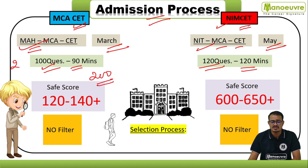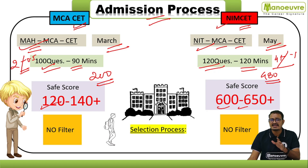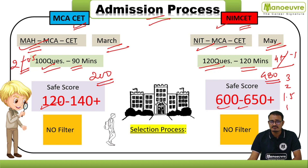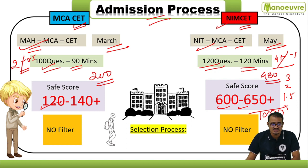The safe score for MCA CET (out of 200, with marking +2 and -0.5) is 120 to 140 plus marks to get into a top college. For NIMCET (marking +4 and -1), out of a total of 480 marks, you need around 600 to 650 plus marks — because the marking system multiplies by 3, 2, 1.5, and 1 — to get into top NITs like NIT Warangal, NIT Trichy, or NIT Surathkal.